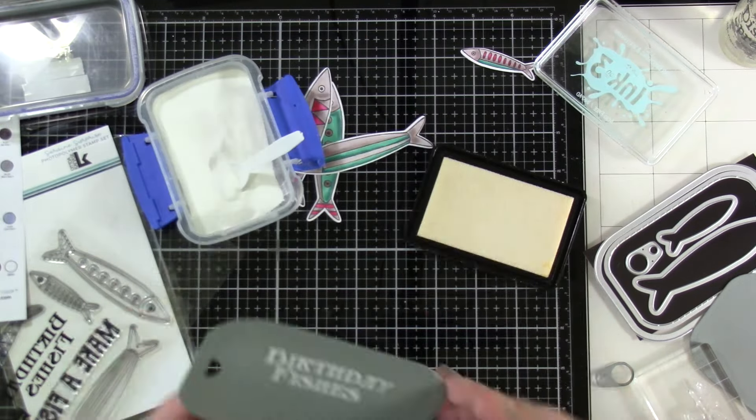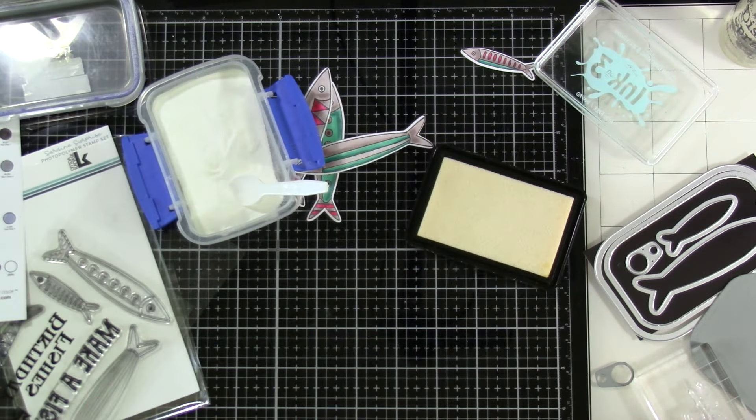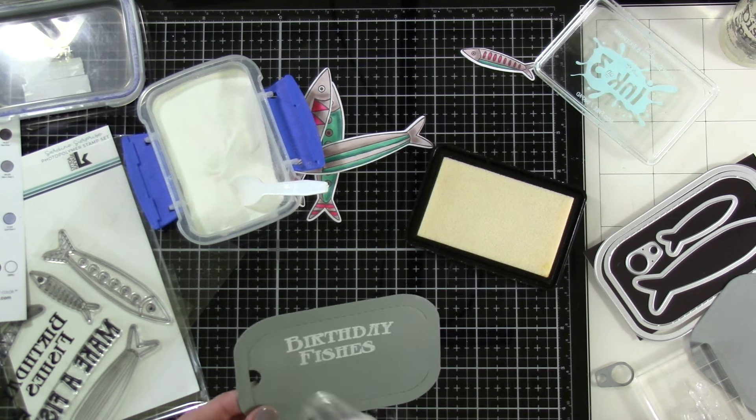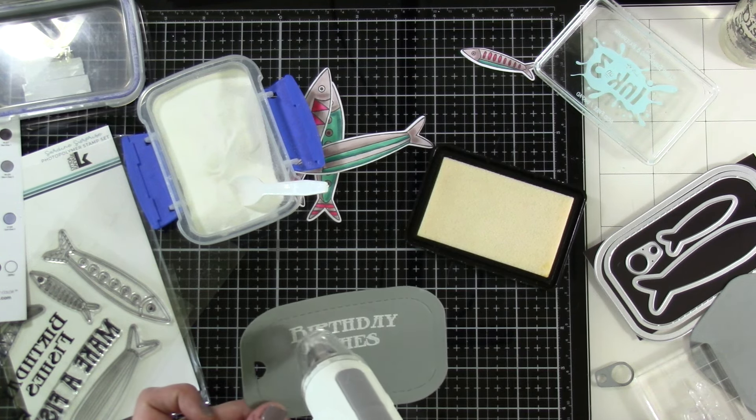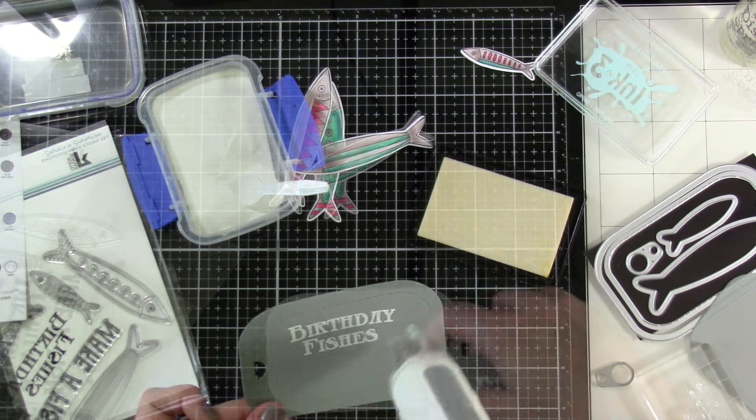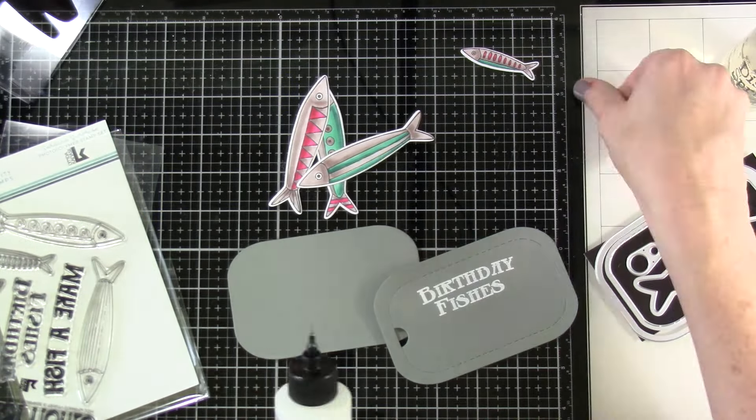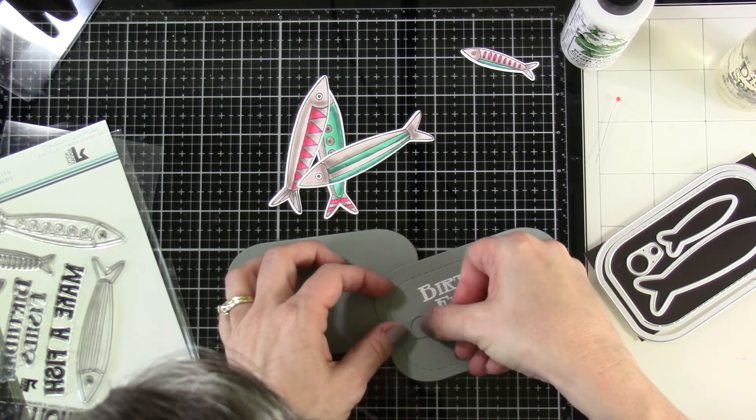Looking back at this I kind of wish that I had done a little ink blending around the edges of the can with some darker gray to add a little bit more dimension to the can itself. Okay so we're just going to heat set what we've already put embossing powder over and then once that's on there we can attach our little tab. I just think that's such a fun detail.